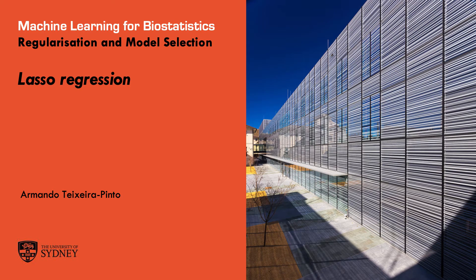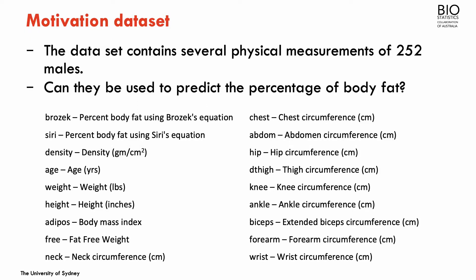In the previous section we introduced the idea of ridge regression, and now we're moving to lasso regression. With this we're coming back to the problem of variable selection. I'm going to use the same dataset that we've been using for this module — the fat dataset — where we have several anthropometric measurements to predict percent body fat, given by the variable Brozek.